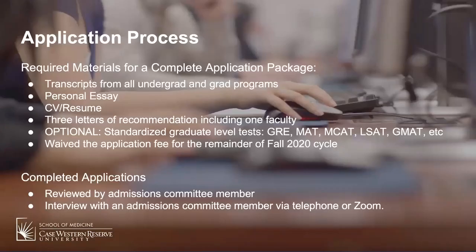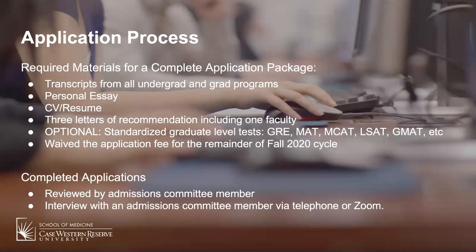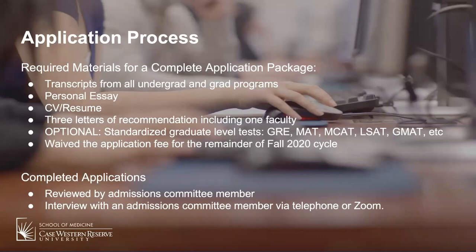The application process hasn't changed much. We've made test scores optional this year due to GRE and MCAT cancellations, and we've waived the application fee for the fall 2020 cycle. We have rolling admissions and the application typically opens in mid-September. We don't have minimum test scores or minimum GPAs — we look at the student's whole package. For example, a student from a strong STEM background might have a lower GPA due to organic chemistry but may have excelled in humanities courses. Part of our process includes an interview so we can understand each applicant's specific situation.